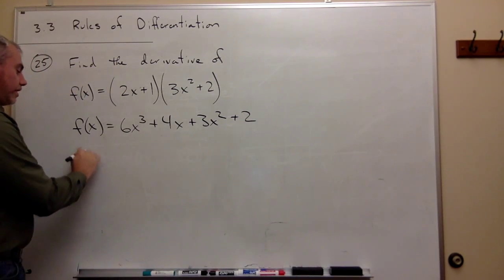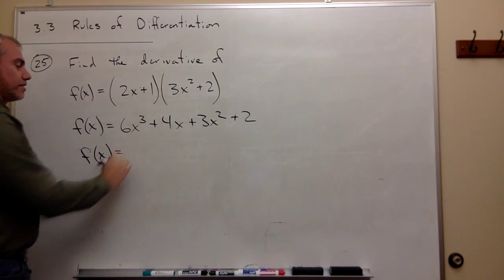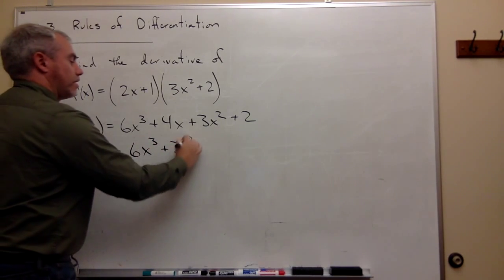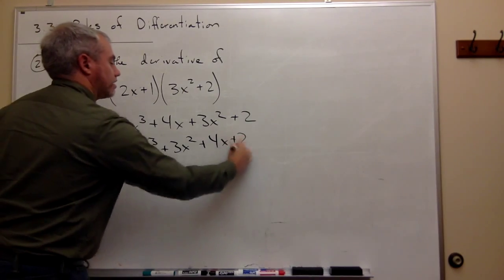I can write that a little nicer by rewriting this as 6x cubed plus 3x squared plus 4x plus 2.